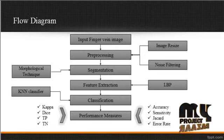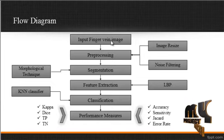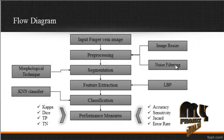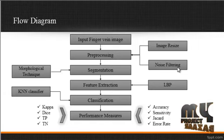Now we are going to discuss the flow diagram for the process. First, the input finger vein image is taken from the dataset folder, which consists of several input images. After getting the image, preprocessing is carried out in two steps: image resize and image noise filtering using the Gaussian filter method.